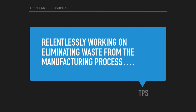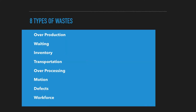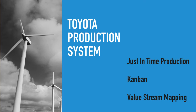The Toyota Production System works toward relentlessly eliminating waste from the manufacturing process. Waste could be overproduction — producing things just because you have the capacity. It could be waiting, where a product needs to go through multiple processes and just sits between two work centers waiting for resources. It could also be waste of inventory, transportation, over-processing, defects, or workforce waste. They identified eight different types of waste and tried to eliminate them to improve plant efficiency.